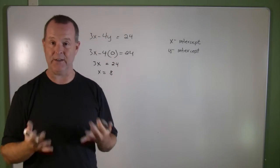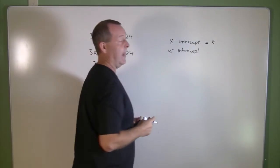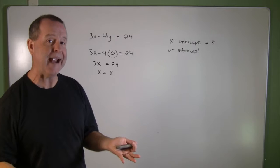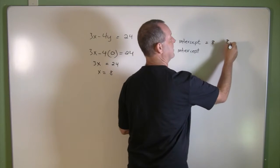So I have an x-intercept of 8. And if I wanted its coordinate pair at that particular time, I know its coordinate pair is (8, 0).